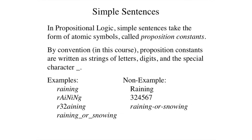Raining beginning with a capital letter is not a proposition because it begins with an uppercase letter. 324567 is not a proposition constant because it begins with a number. Raining hyphen or hyphen snowing fails because it contains the dash or minus character.